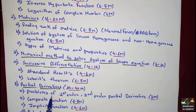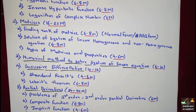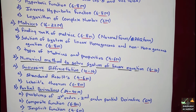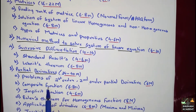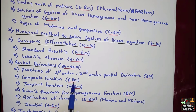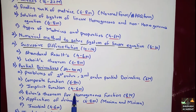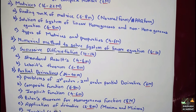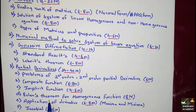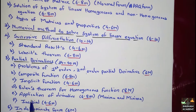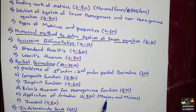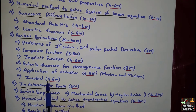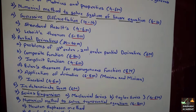Next module is Partial Derivatives, carrying 34 to 40 marks. The first topic covers problems of 1st order and 2nd order partial derivatives — 6 marks. Composite function — 6 to 8 marks. Implicit function — 4 to 6 marks, which may appear in Question 1. Euler's Theorem for Homogeneous Function — 8 marks. Application of Derivatives, Maxima and Minima — 6 to 8 marks. Jacobian — 4 to 6 marks, also possible in Question 1.